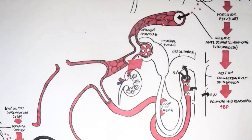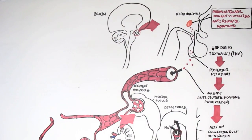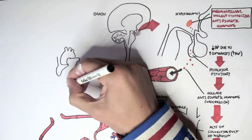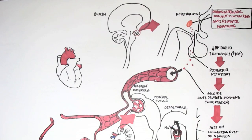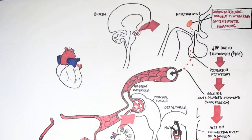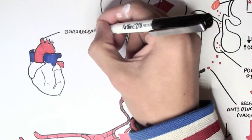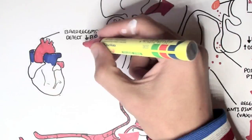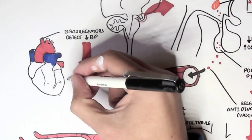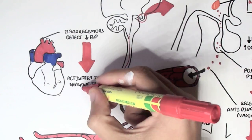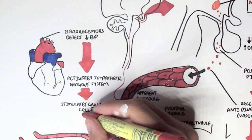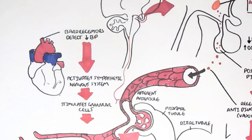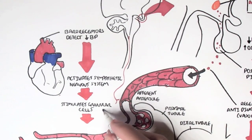Now, possibly the most important hormone that has a role in regulating blood pressure is angiotensin II. The story begins with the baroreceptors within the heart. In the aorta, baroreceptors detect changes in blood pressure. If they detect a decrease in blood pressure, this activates the sympathetic nervous system, which then stimulates granular cells — also known as juxtaglomerular cells — within the afferent arteriole to release renin.